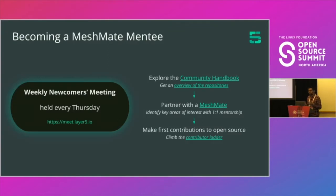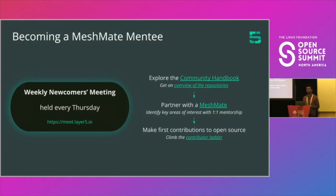To become a MeshMate, you can join the weekly newcomers meetings that take place every Thursday. You can also follow the community handbook, which covers how to get started as part of the Layer 5 community, and get an overview of all the different open source projects available. You are then paired with a MeshMate for one-to-one mentorship. The idea is that you are guided not only in terms of the projects themselves, but MeshMates also help you shape your career by understanding your interests and helping you make your first ever pull request and first open source contribution, so you become more confident and competent in contributing to the cloud native landscape.